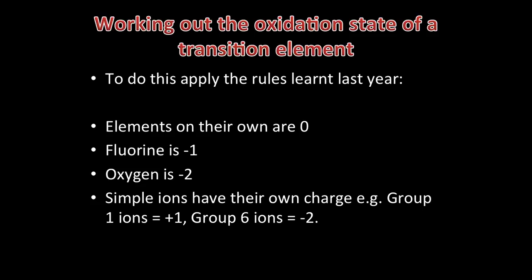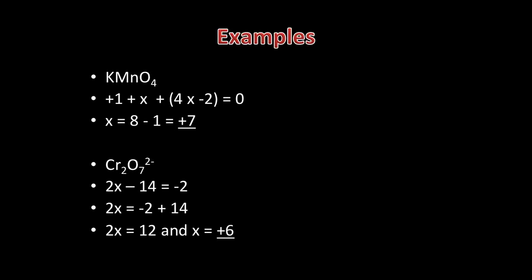So let's carry out an example. What is the oxidation state of manganese in KMnO4, potassium manganate? Well, potassium has an oxidation state of plus 1, oxygen minus 2, and there are 4 of them, so that adds up to minus 8. There is no overall charge in the compound, so plus 1 plus x plus minus 8 is equal to 0, so x must be equal to plus 7.